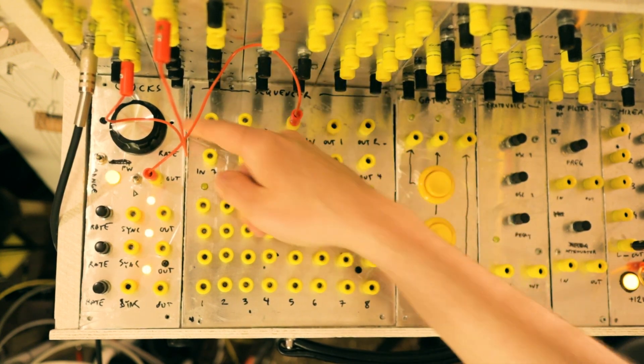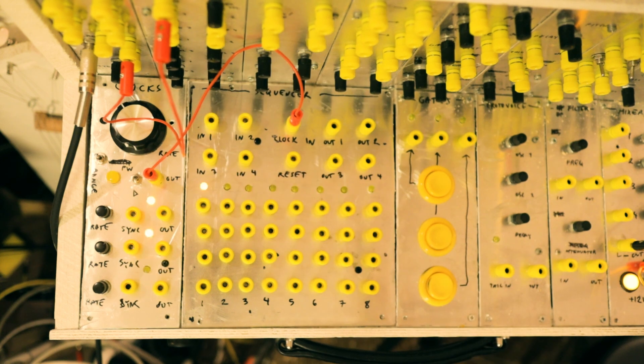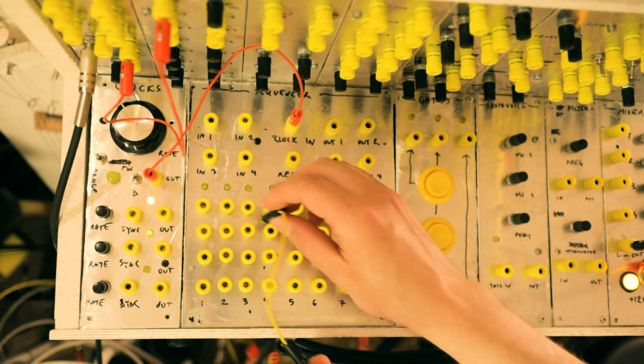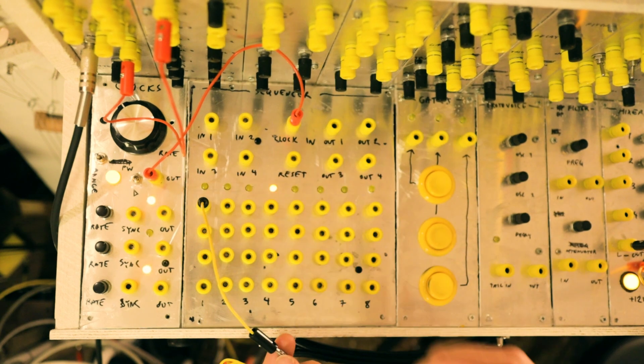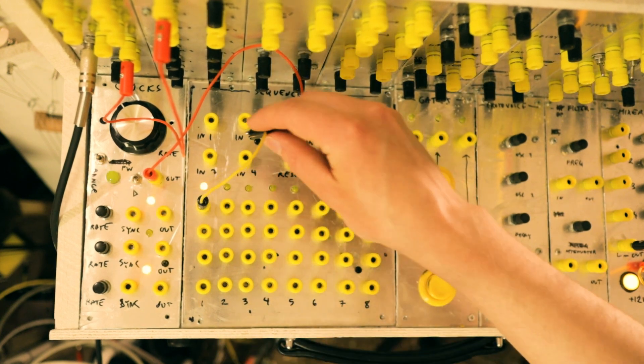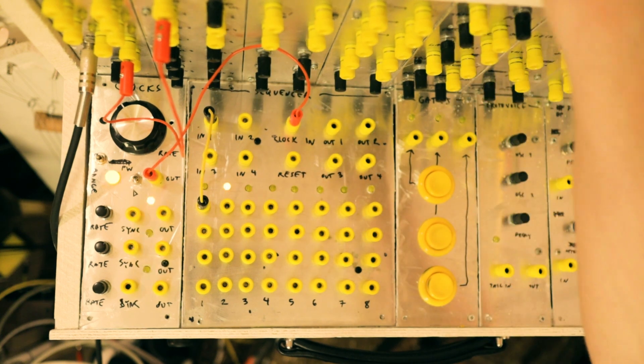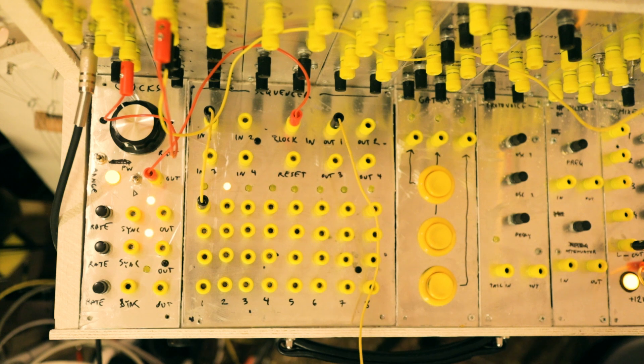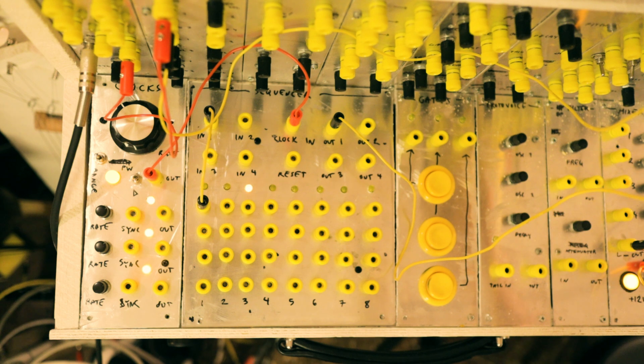So how it works is that you patch a clock to your clock input and there you see the sequence is running now. And then we can take any step, let's take the first step of the first row and plug it in to the first AND gate, and then we take the output of the first AND gate and connect it to let's say a bass drum and we should hear a bass drum.